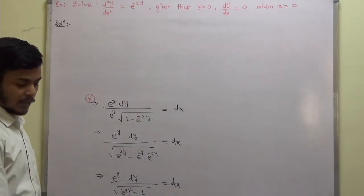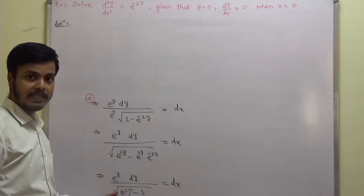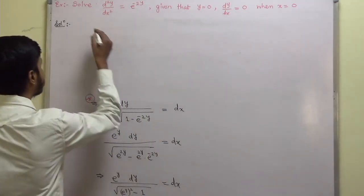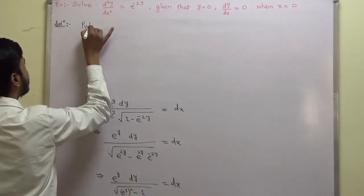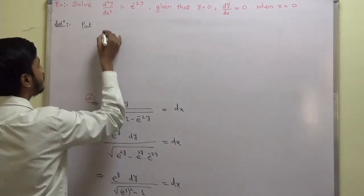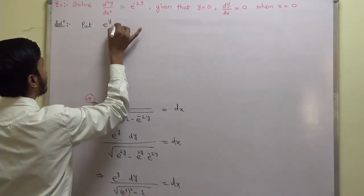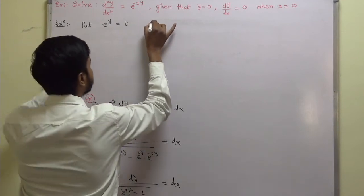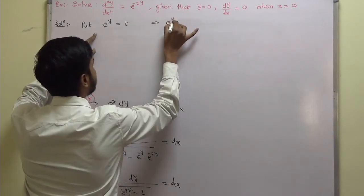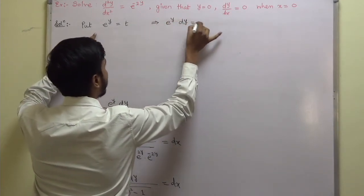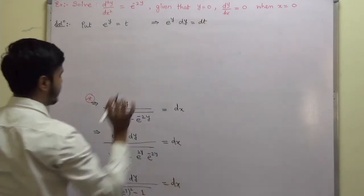You can solve it further by applying the method of substitution. Put e^y = t, which implies e^y·dy = dt.